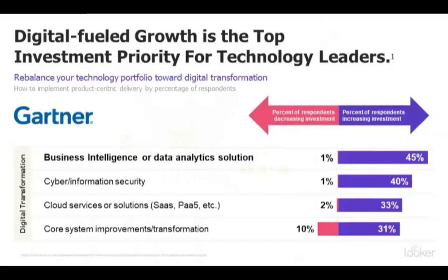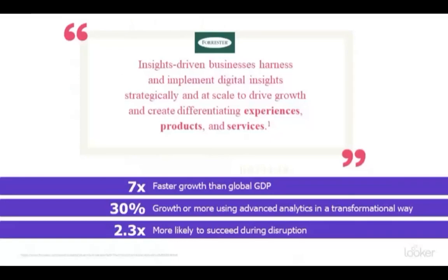Digital transformation is a profound shift in the way companies use technology to deliver value to their customers. It is, without a doubt, the number one priority for technology leaders today. And as you can see in this graph, out of all the areas that drive digital transformation, the number one area of investment is data and analytics, proving just how pertinent this topic is. Forrester calls the companies doing this really well 'insight-driven companies' — those using data to drive growth and create differentiating experiences, products, and services.